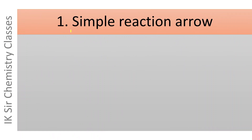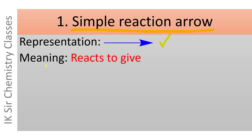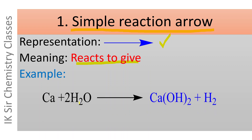The first one is the simple reaction arrow. This simple reaction arrow is represented by a standard single-headed arrow, and its meaning is 'reacts to give.' For example, calcium reacts with water forming calcium hydroxide with the liberation of hydrogen gas. This simple reaction arrow is used frequently throughout chemical reactions.